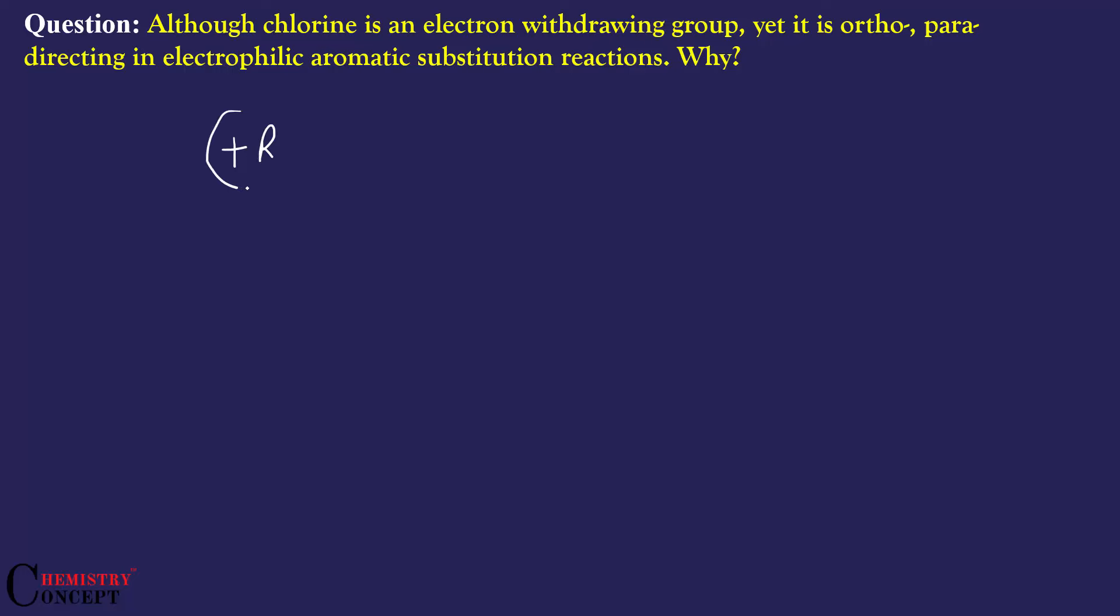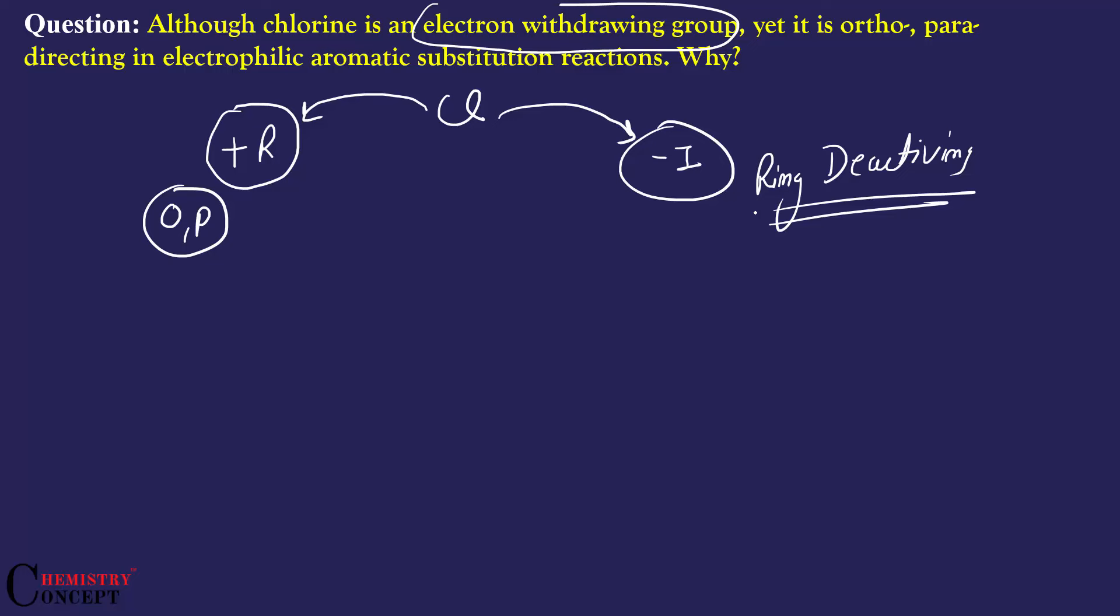First is +R effect, second is -I effect. Chlorine shows +R effect, that's why it is ortho-para directing. And because it is electron withdrawing, it shows -I effect, and that's why it is ring deactivating. Your answer should include both +R and -I effects.